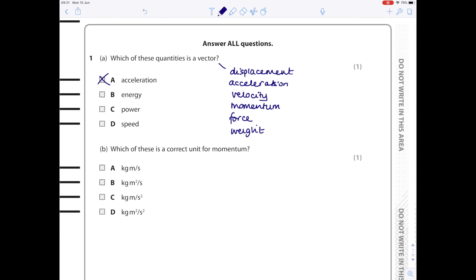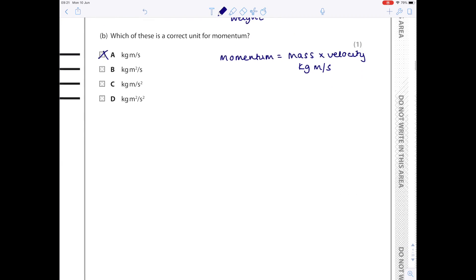Which of these is the correct unit for momentum? Momentum we can work this out by looking at the equation. Momentum equals mass times velocity. We know the unit of mass is kilograms, velocity is meters per second. Just pop them close together and therefore it's kg meters per second, which is A.